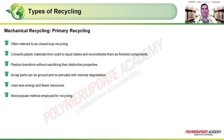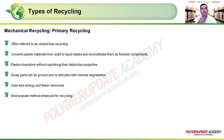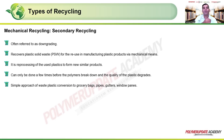Primary recycling is a closed-loop form of recycling. It converts plastic materials from solid to liquid state and reconstitutes them as finished components. Plastics are transformed without sacrificing their distinctive properties. Scrap parts can be ground and re-extruded with minimal degradation — for example, via injection molding or extrusion. It uses less energy and fewer resources by substituting virgin material, and is the most popular method employed wherever possible.